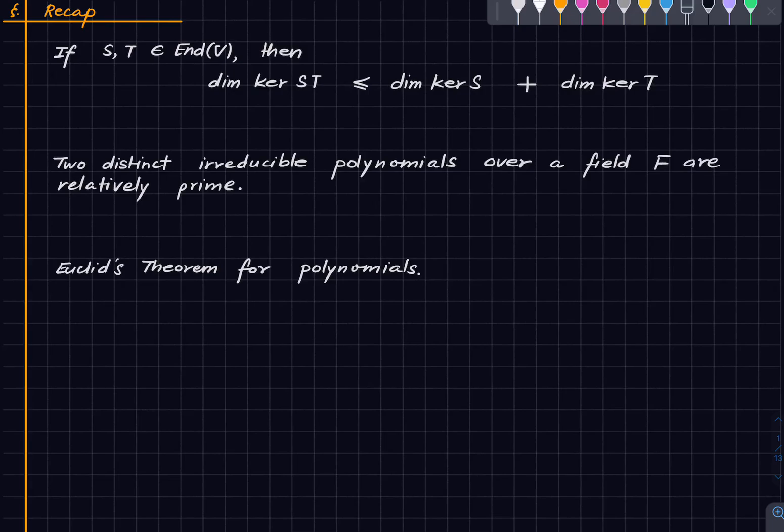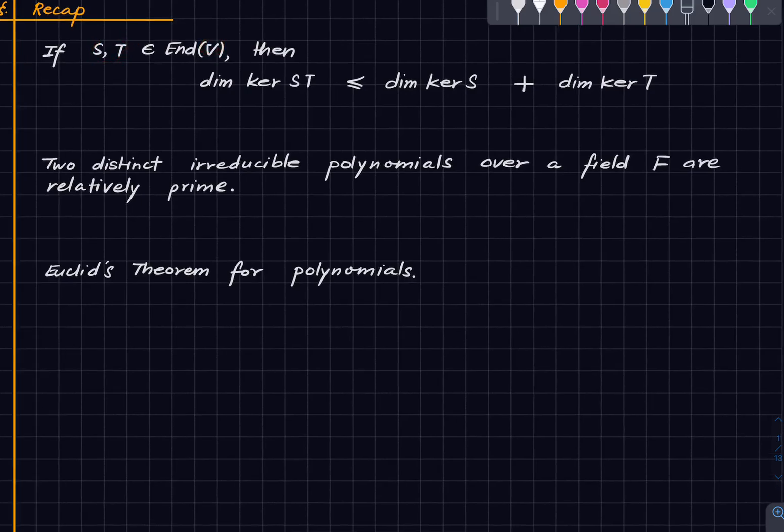Let us recall the main ingredients that we will need to follow. First of all, we will recall the fact that we have proven way earlier. If we have two endomorphisms on a vector space V, then the dimension of the kernel of the composite is at most the sum of the dimensions of the individual endomorphisms.